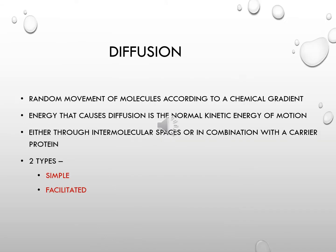Diffusion is a random movement of molecules according to a chemical gradient and the energy for diffusion is derived from the normal kinetic energy of motion. In cell transport, diffusion occurs either through intermolecular spaces or in combination with a carrier protein. Thus diffusion is of two types: simple diffusion and facilitated diffusion.